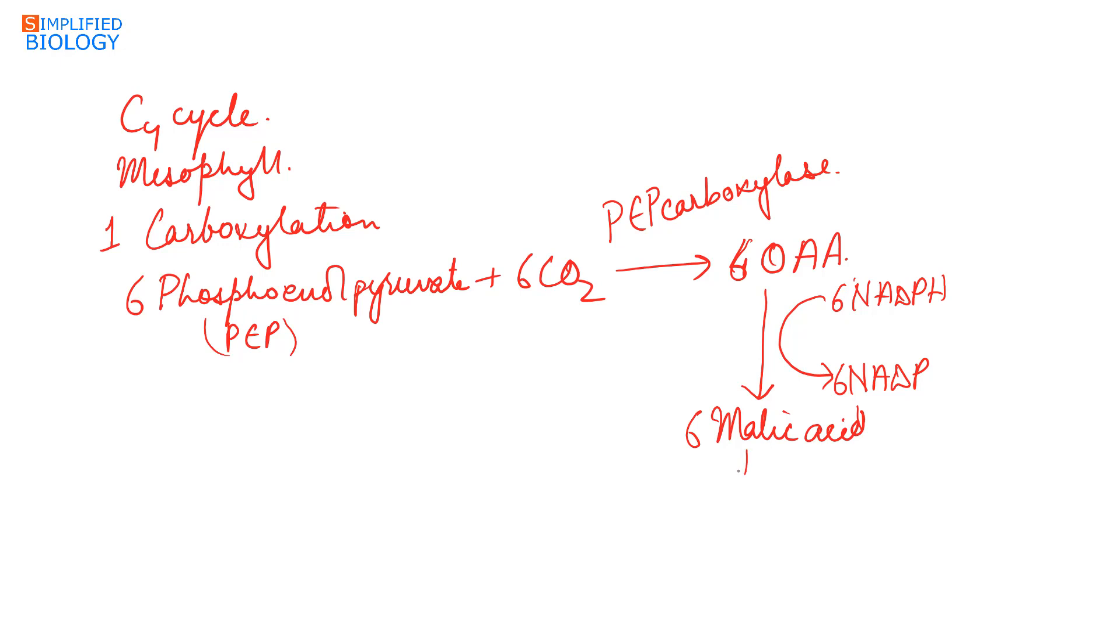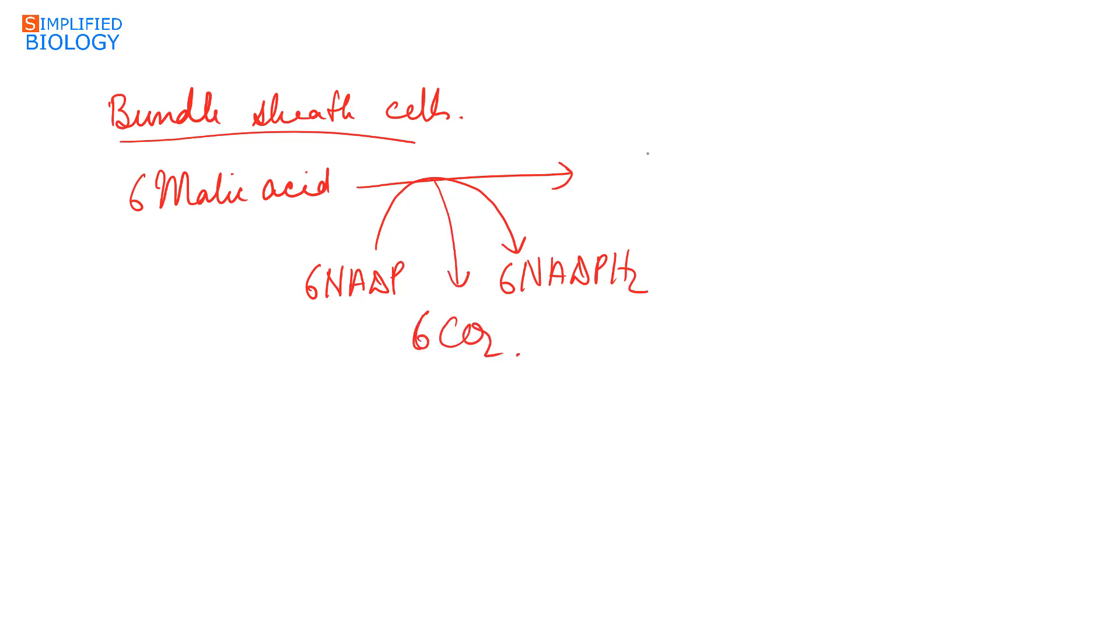This malic acid form is then transferred to the bundle sheath cells. The process continues further in the bundle sheath cells where malic acid undergoes oxidative decarboxylation. That is, it reduces NADP to NADPH, releases carbon dioxide, and itself changes into pyruvic acid. This occurs in the presence of enzyme malate dehydrogenase.